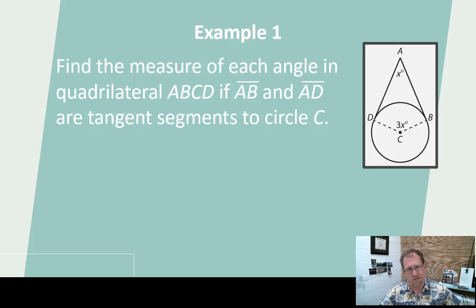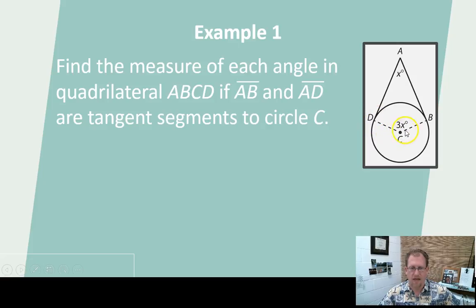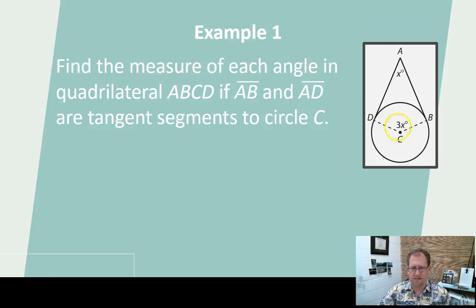Here we have essentially a kite drawn on top of a circle — quadrilateral ABCD. AB and AD are tangent segments to the circle, which means the angles at those points are 90 degrees. These are both radii of the circle, so they're equal to each other. We're supposed to find the measure of the angles. This is 90, this is 90, this is X, and this is 3X.